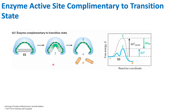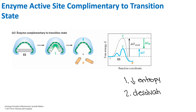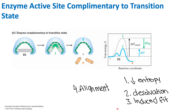Our entropy also decreases, and we can understand why: when the substrate binds to the enzyme, it is more ordered. If the substrate is free-floating, that's more randomness, but once it binds, that's more order, and our entropy decreases — which is also unfavorable. So the binding energy is used for the entropy cost as well. To summarize, we had four unfavorable processes: decrease in entropy, desolvation, induced fit, and alignment — and our binding energy is used for all four of these.